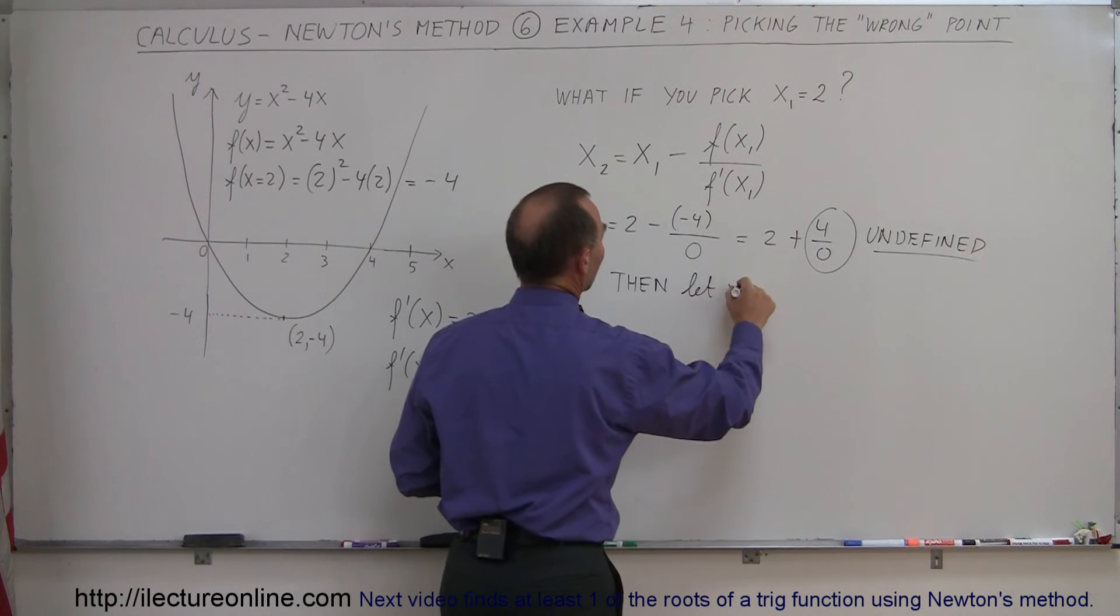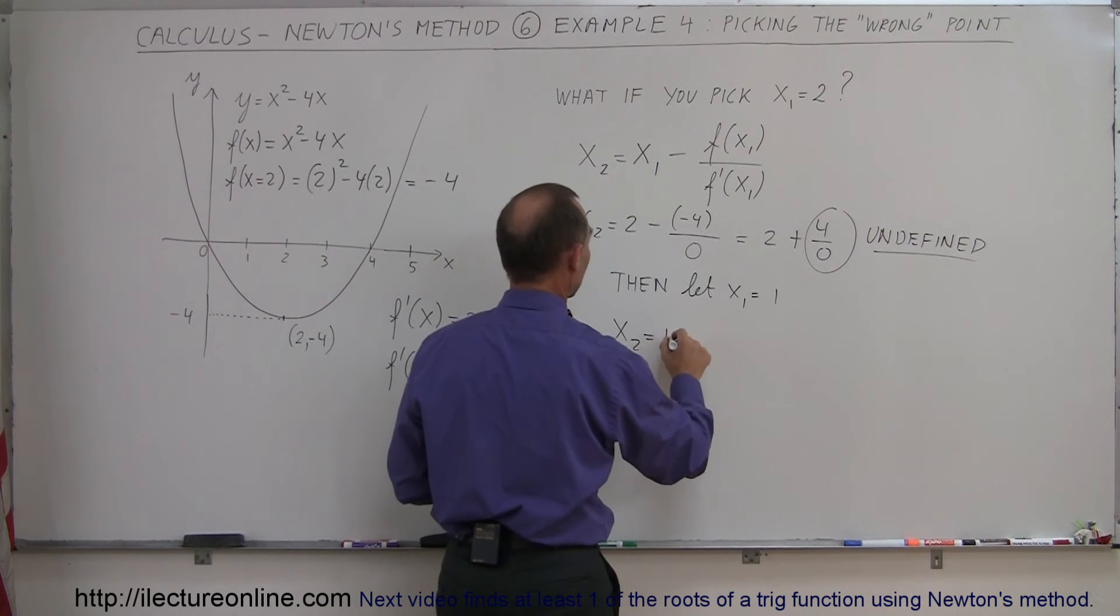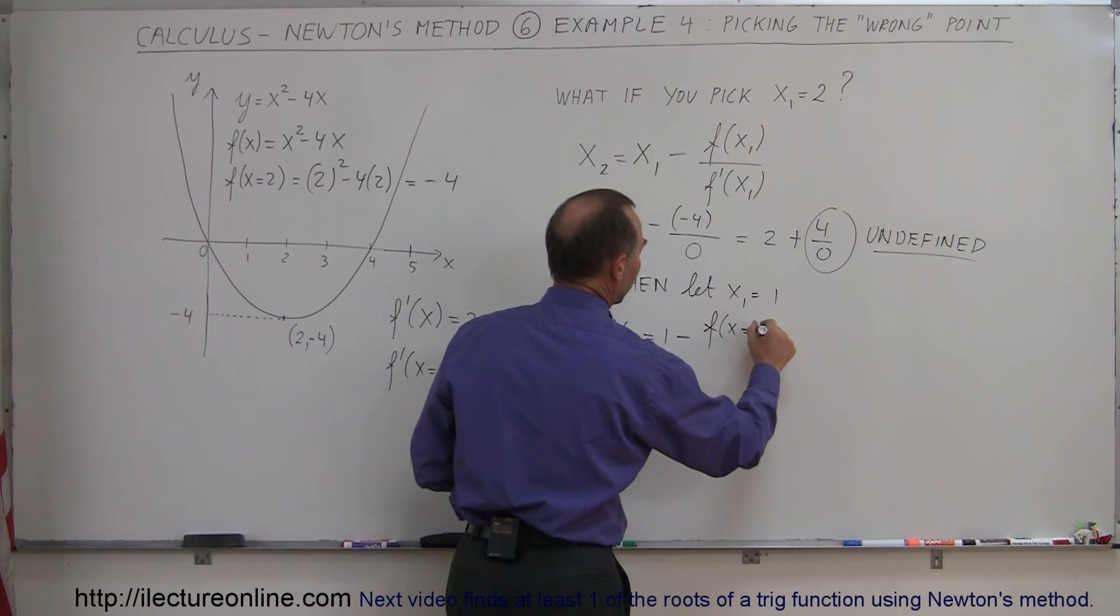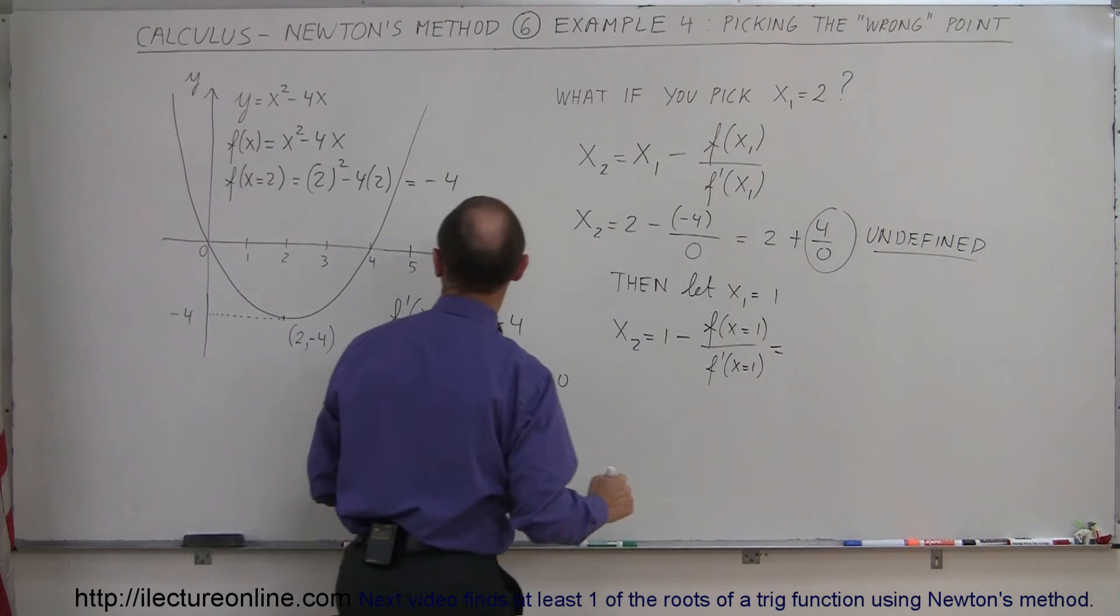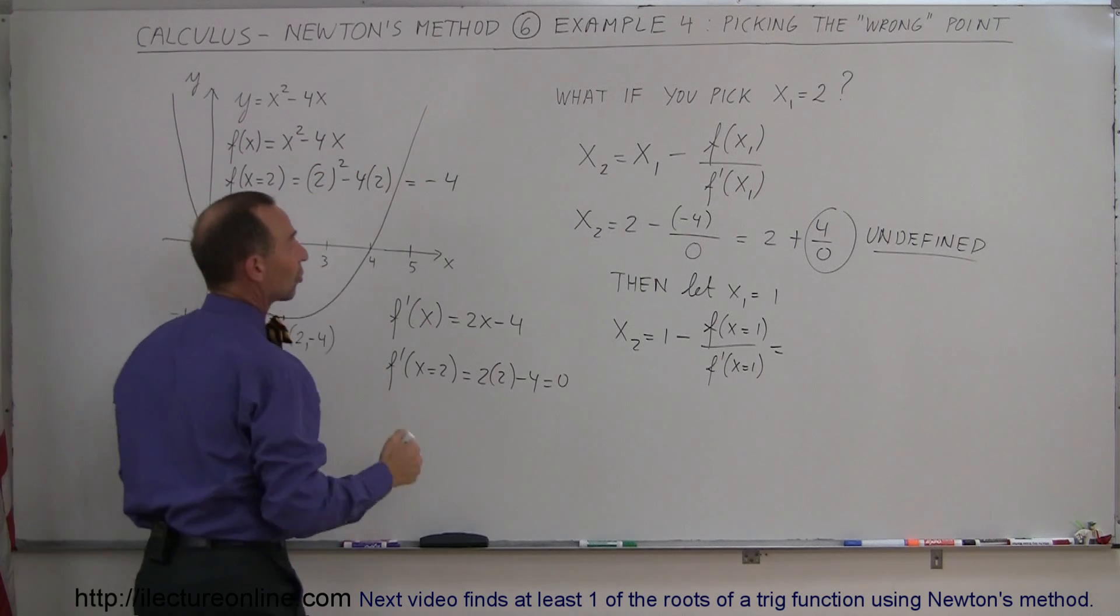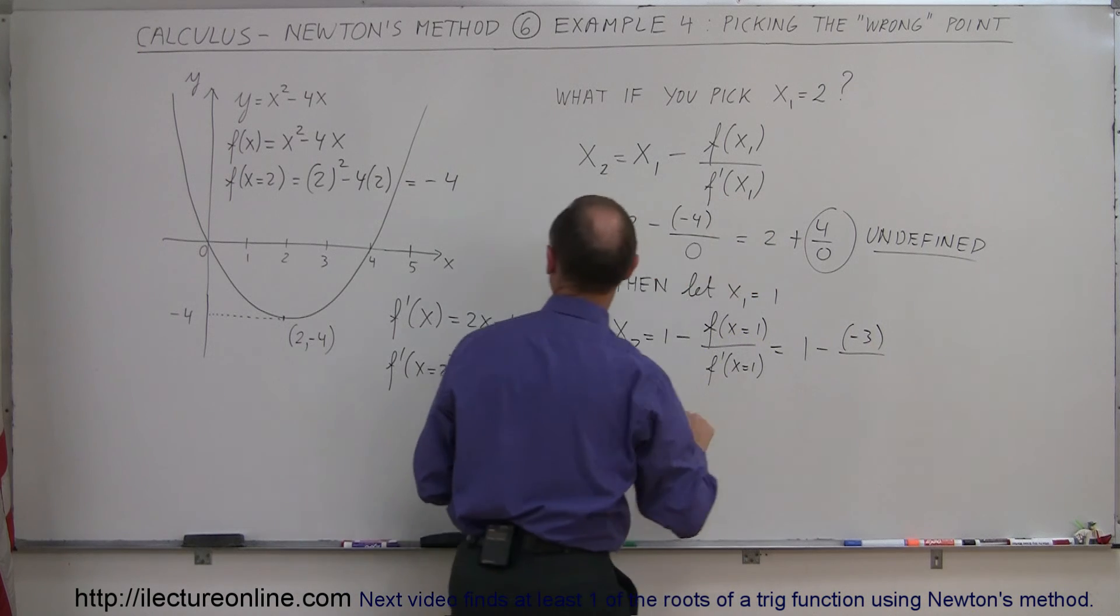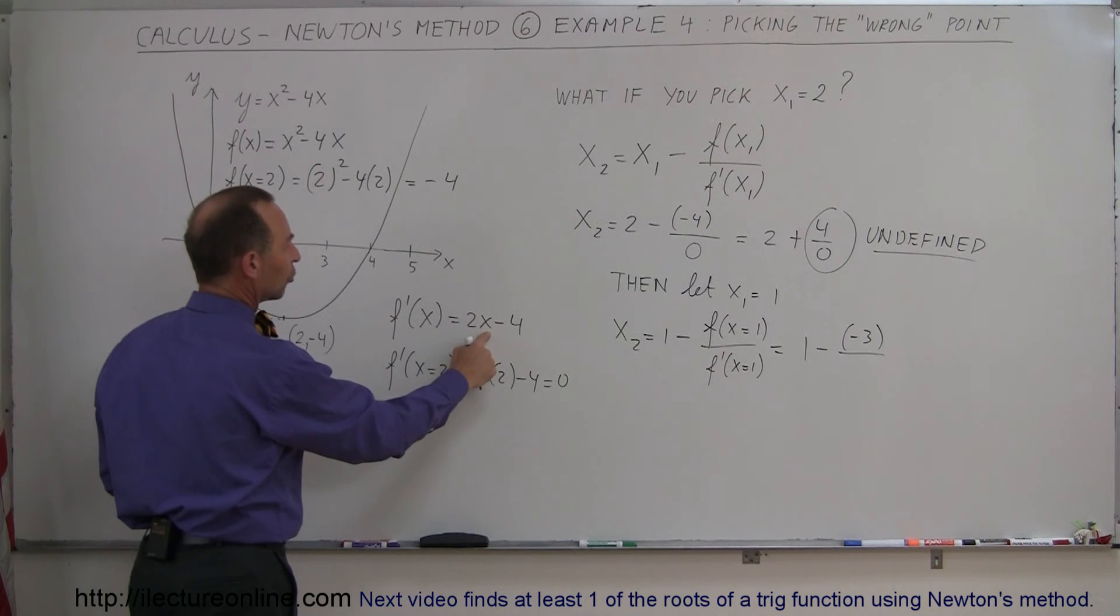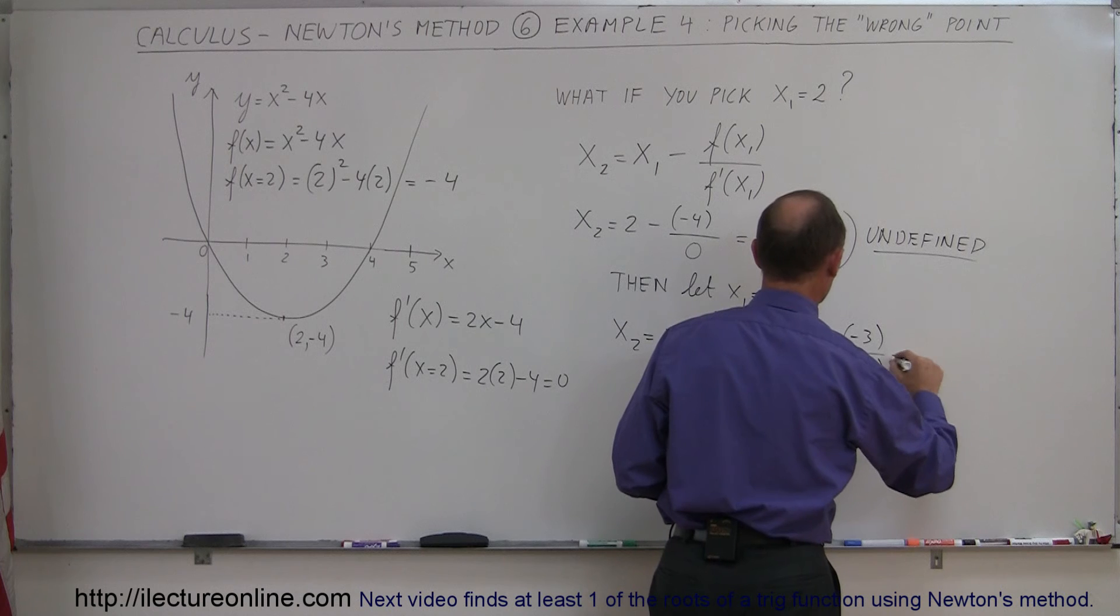So then x sub 2 equals 1 minus the function evaluated at 1 divided by the derivative evaluated at 1. So if I evaluate the function at 1, I get 1 minus 4 times 1, that's minus 3. So you get 1 minus a minus 3 divided by the derivative evaluated at 1. And the derivative here is 2x minus 4, so 2 times 1 is 2, minus 4 is minus 2. So this would be equal to, well, that's a minus and a minus that cancels out.